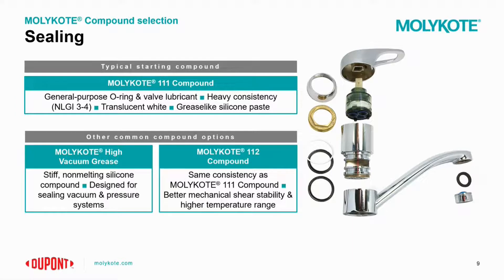Now let's get into the Molykote compound offerings. For sealing, a great starting compound is Molykote 111 — a general O-ring and valve lubricant. It's thick in consistency, NLGI grade three to four, and translucent white. The Molykote High Vacuum Grease is a stiff, non-melting silicone compound excellent for sealing vacuum and pressure systems. The Molykote 112 compound is similar to the 111 but with different chemistry — designed for better mechanical shear stability, making it better suited for dynamic versus static applications, with a slightly higher temperature range.